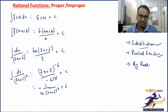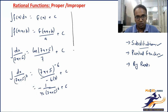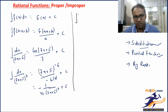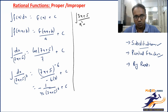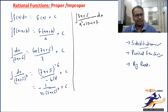Now, what if we have a fraction on top and also a fraction on the bottom? For example, if we have (3x+5) divided by (x² + 10x + 7) to integrate — how do we deal with this? Both numerator and denominator are polynomials.